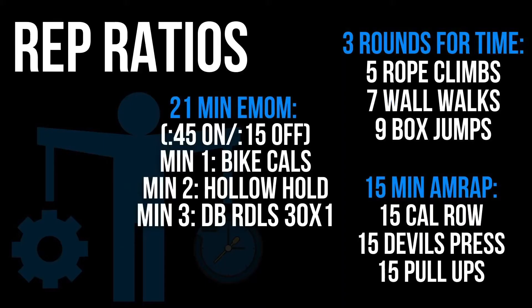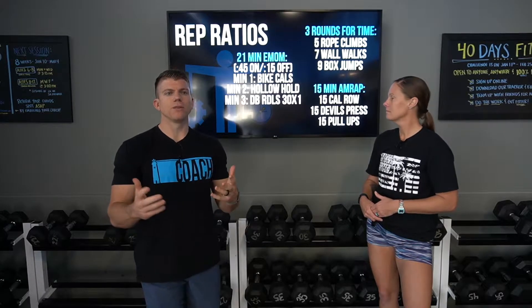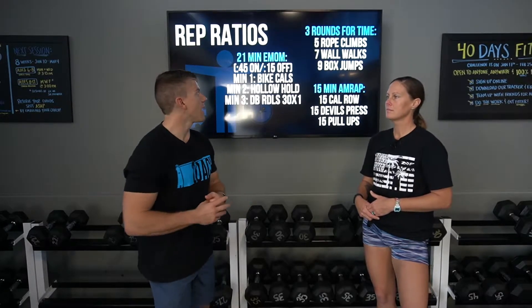Let's go through the examples on the board. Starting with this EMOM — a 21-minute EMOM, 7 rounds of 45 seconds on, 15 seconds off, three movements. When you look at it, you want to ask: how would it be to spend 45 seconds on a bike? How would it be to spend 45 seconds in a true hollow hold? How would it be to spend 45 seconds on dumbbell RDLs at a tempo? The bike is easy because you can modulate your pace to make it repeatable for seven rounds.